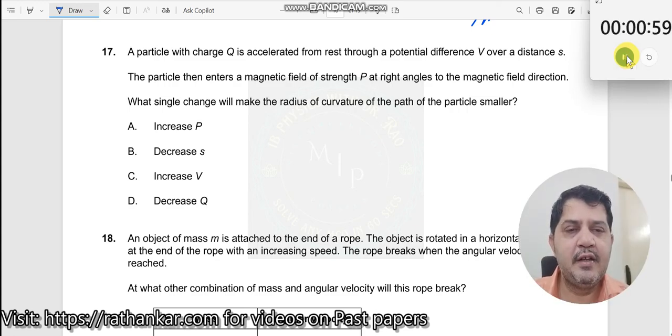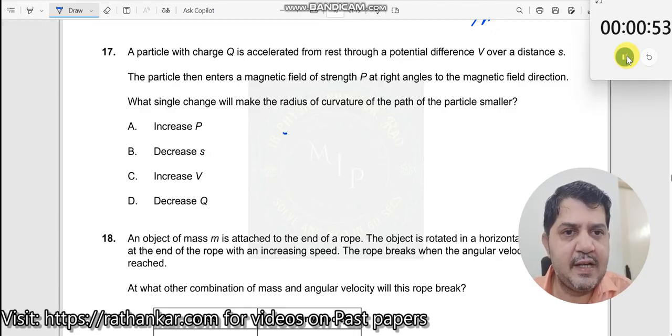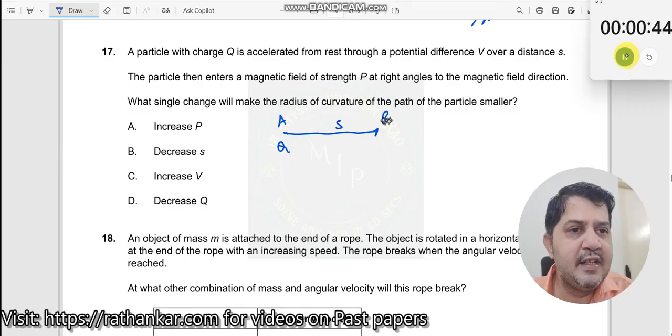Question number 17. A particle with charge Q is accelerated from rest through a potential difference V over a distance S. The particle reaches this point. Let me call this point as A, call this point as B.